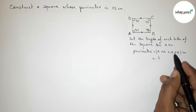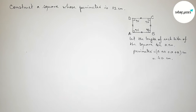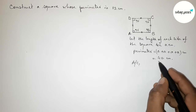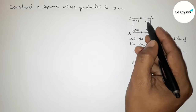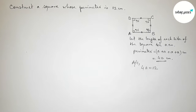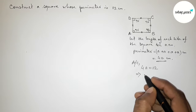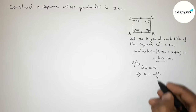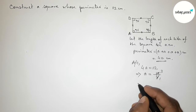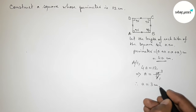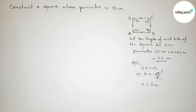Simplifying, the total perimeter is 4a centimeters. So 4a = 12, which implies a = 12 divided by 4. Dividing, 4 goes into 12 three times, so therefore a = 3 centimeters.